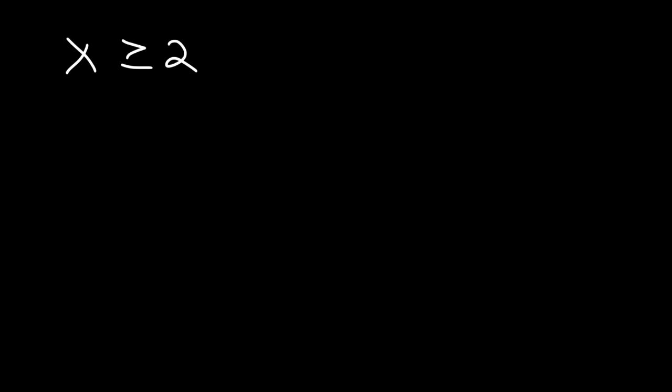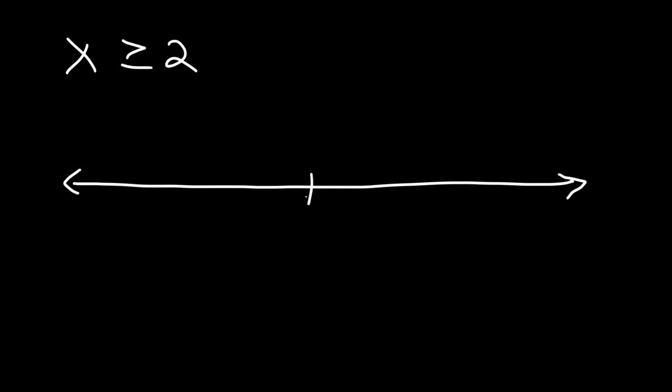Now let's try another example. Let's say x is equal to or greater than 2. How do you think we should represent this solution using interval notation? Feel free to pause the video — plot the solution on a number line, then write it using interval notation. So let's put 0 in the middle; 2 is to the right of 0.